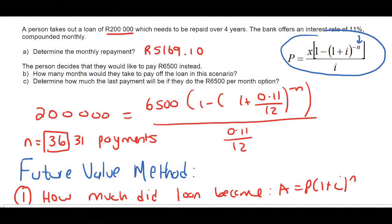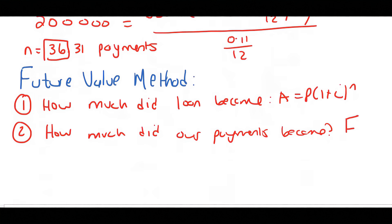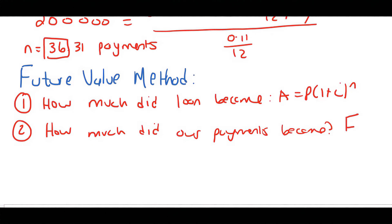The loan was originally 200,000 Rand. Let's see how much that 200,000 Rand would become after 36 months. If you don't know how to do balance outstanding, I would suggest you watch that video of mine. So for number one, we say A equals 200,000 times 1 plus 0.11 over 12 to the 36. We are ignoring the 0.31 for now. We just want to see how much we still owe the bank after 36 months. That's going to be 277,775.73.